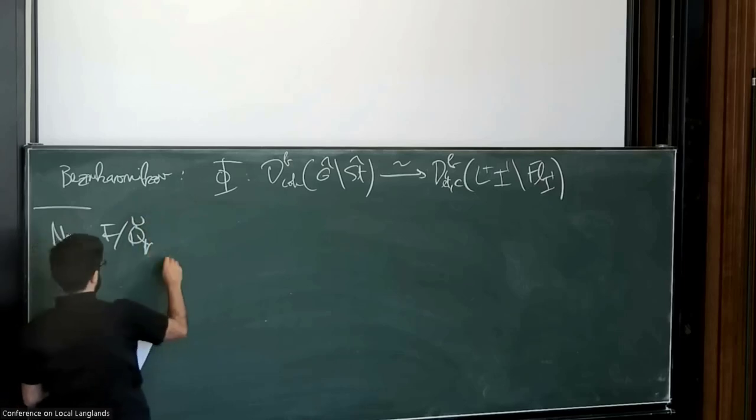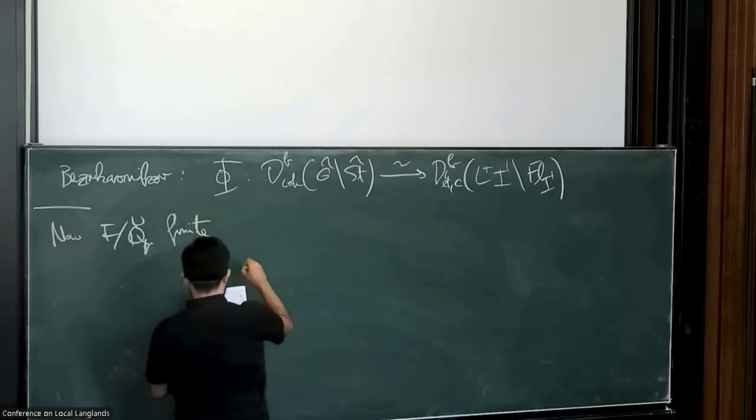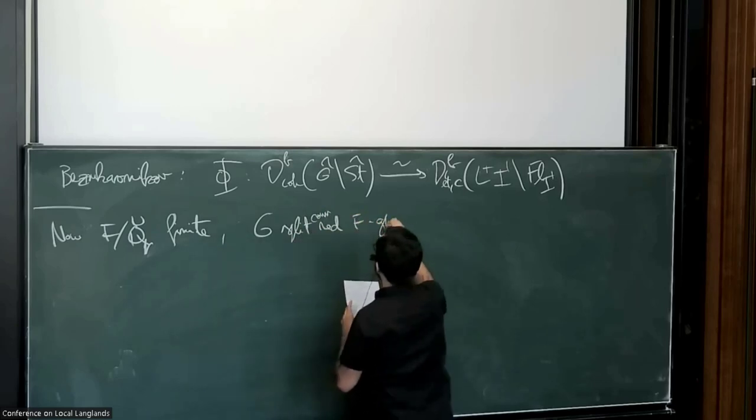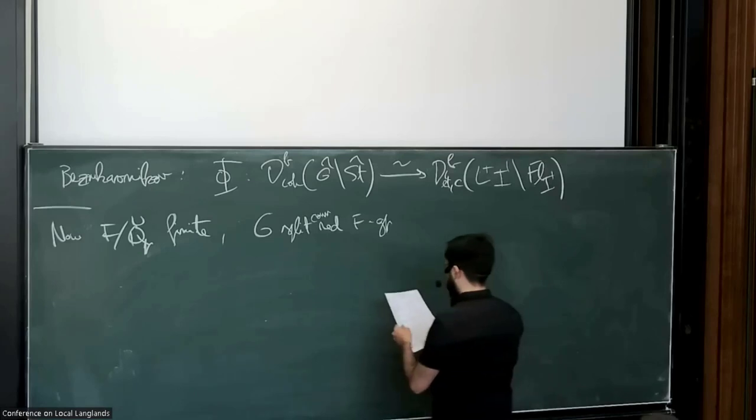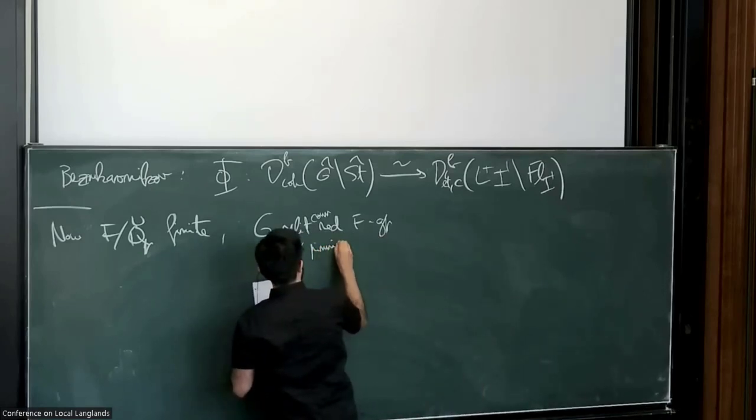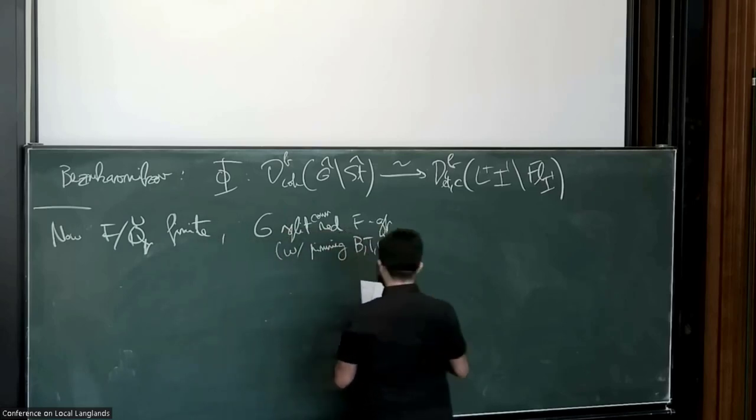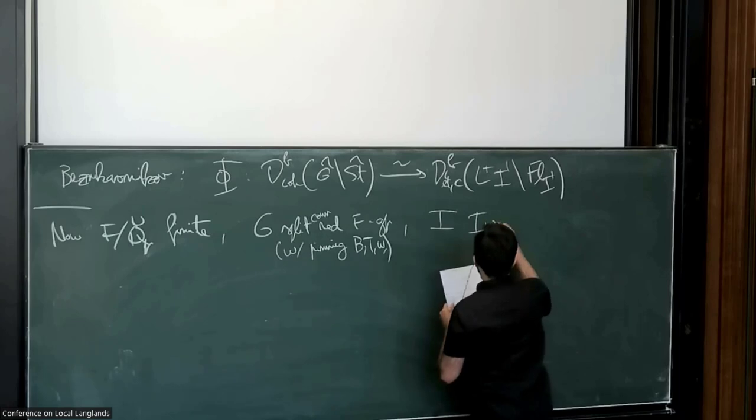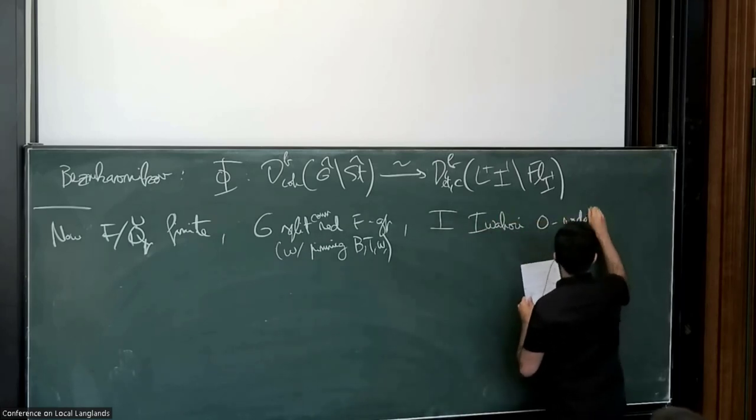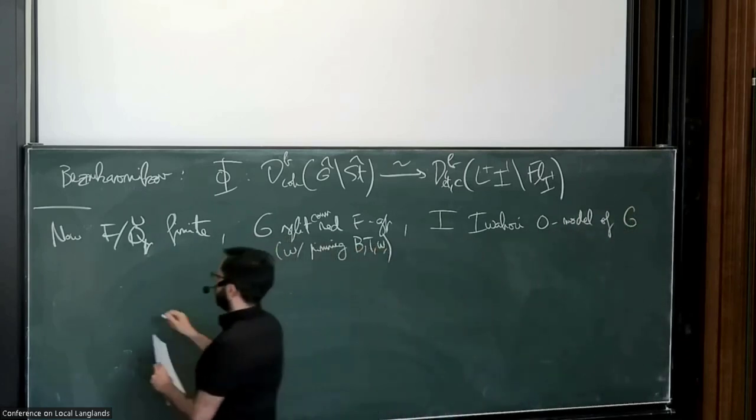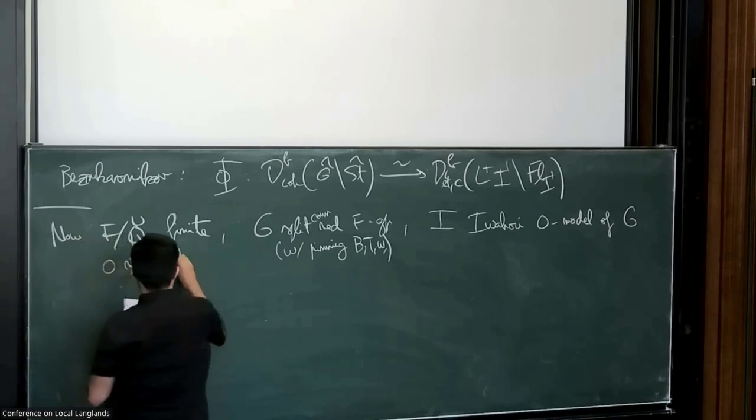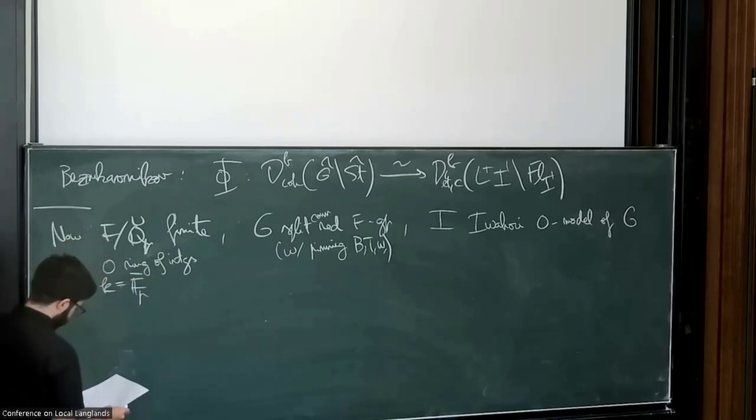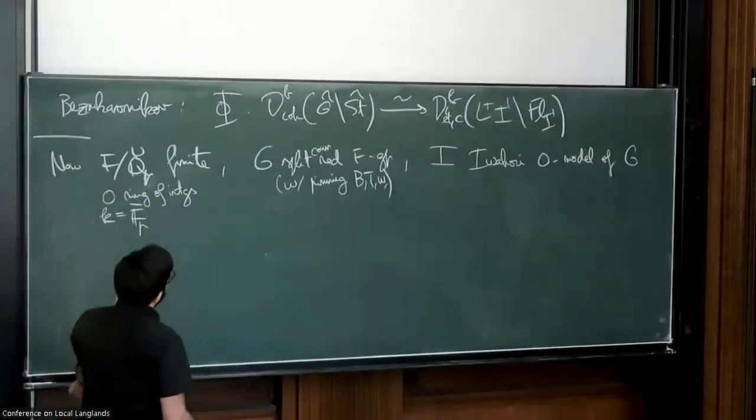Right, so now I come to my setup. Take a finite extension of Qp. Now G will be a split connected reductive group with the dual G hat. Maybe also fix a pinning. Then I'll take a Bruhat-Tits model of G, where O is the ring of integers. I should have said the ring of integers. So it's clear. Usually write k for the residue field, which is fp bar.